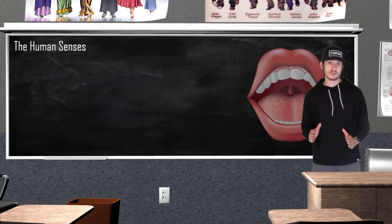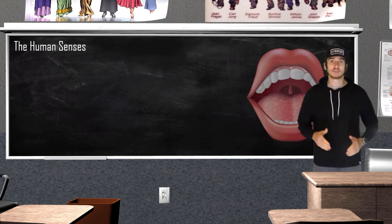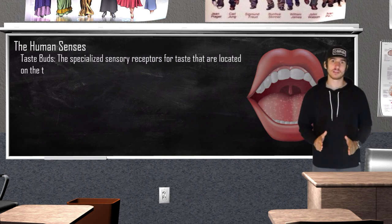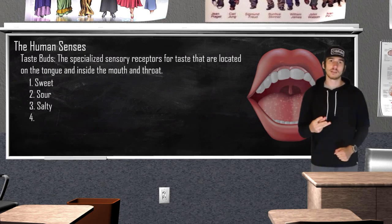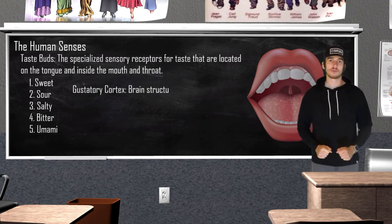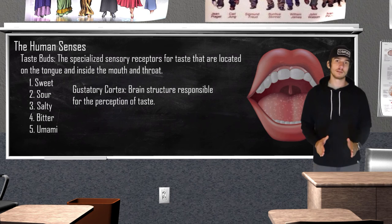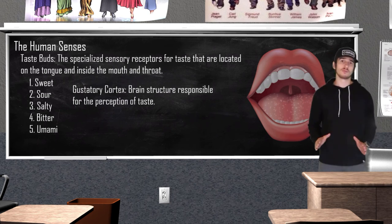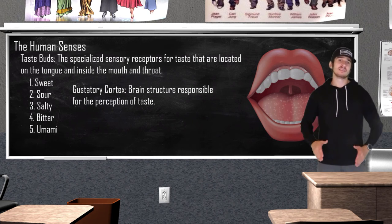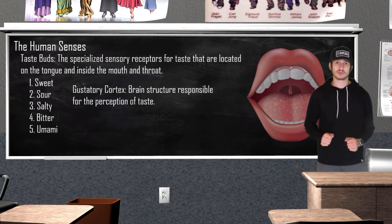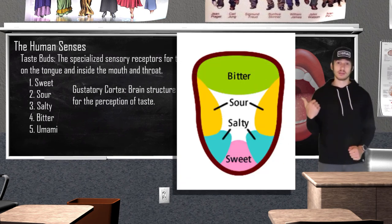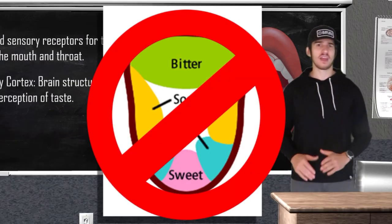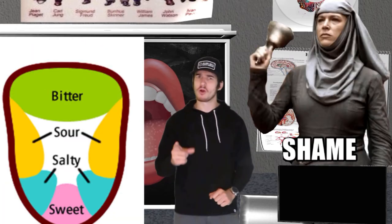Taste, or gustation, is also a chemical sense and is technically four senses in one. Taste is processed by our taste buds, which are our sensory receptors for taste. The main human tastes are sweet, sour, salty, bitter, and umami — umami refers to a savory taste characteristic of broth and meats due to high levels of glutamate. While individuals can tell the difference between things like bitter and sour even without smell, the aroma associated with taste plays a huge role in sensing taste. It's also a great time to dispel the myth of the tongue map — that is simply not true.